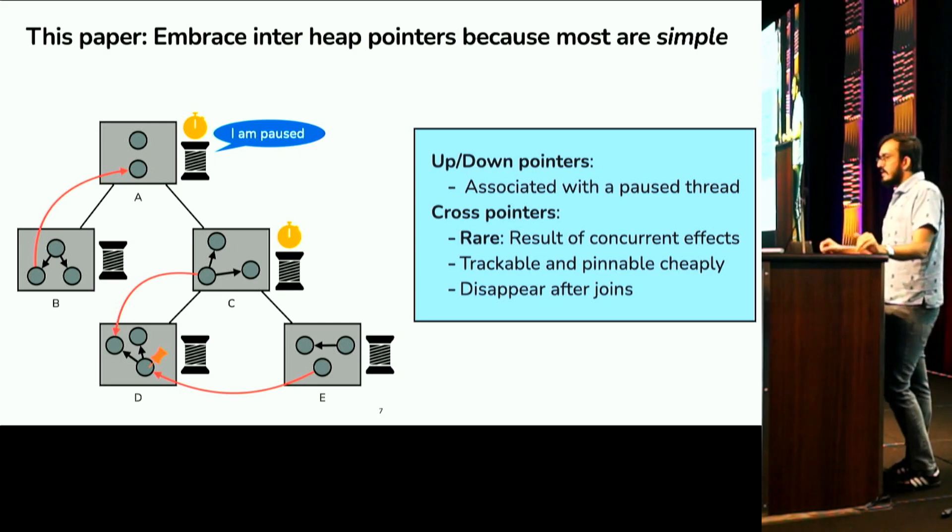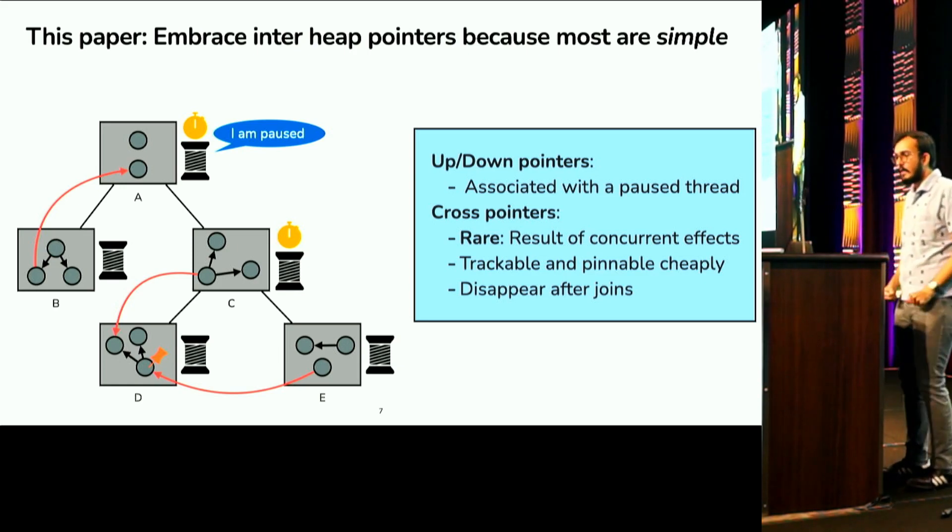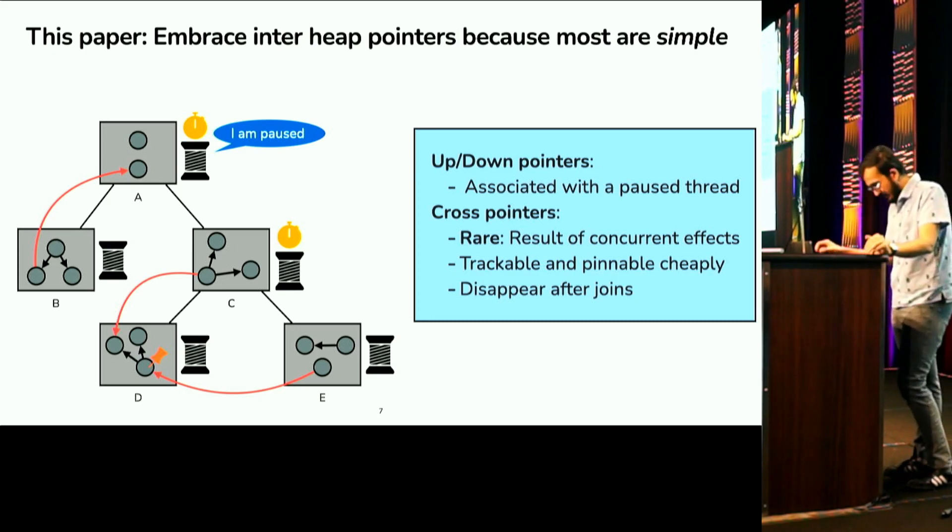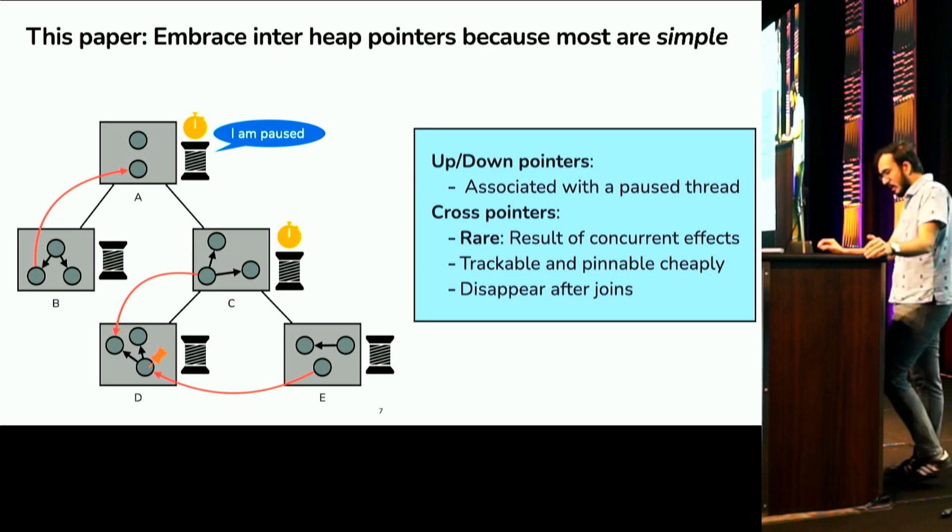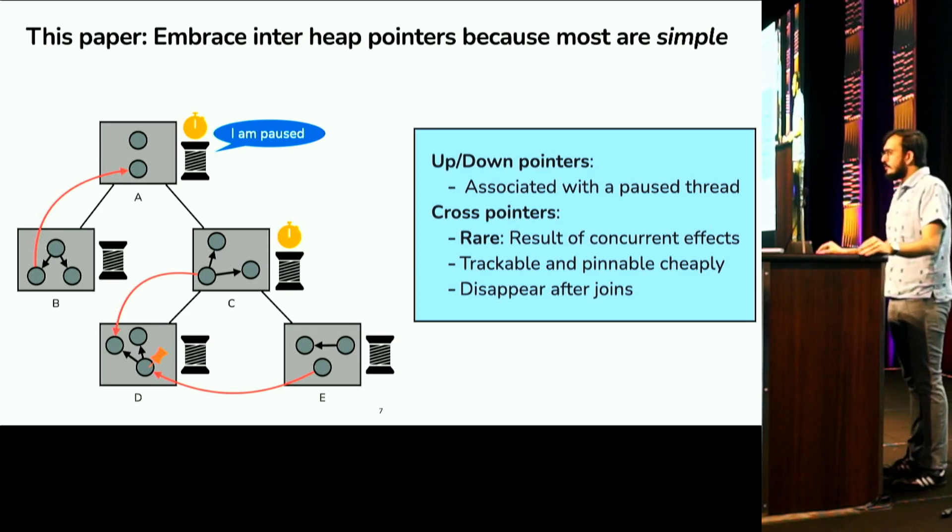Just to illustrate all this, I've drawn a tree on the slide. In this tree, the heaps A and C are suspended. They are waiting for their children to join back. And threads B, D, E are executing in parallel. They are allocating memory in parallel. Okay. So, now that we have done all of this, what we realized is that most of the inter-heap pointers are actually simple.